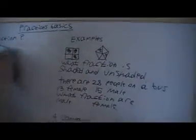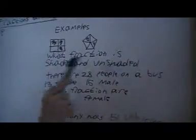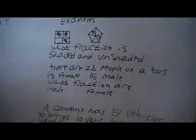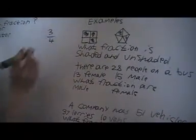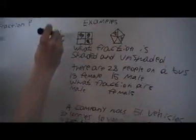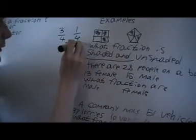Let's look at some examples now. I've got two diagrams here — it says what fraction is shaded and unshaded. Looking at the first diagram, I've got four parts, so the denominator is four. We've got three parts shaded, so the numerator would be three. For the unshaded parts, we've still got four parts and only one is unshaded.